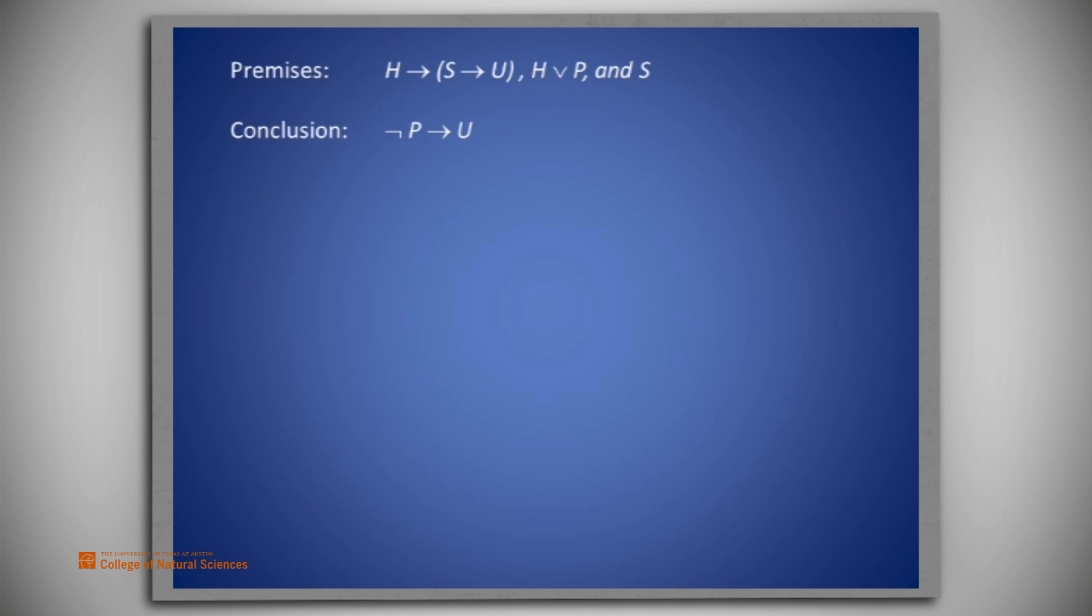Suppose we assumed the conditional premise not P, and from that we were able to show U. Then we would have the conclusion that not P implies U. That's the idea in conditionalization. We temporarily add premises to get implications.